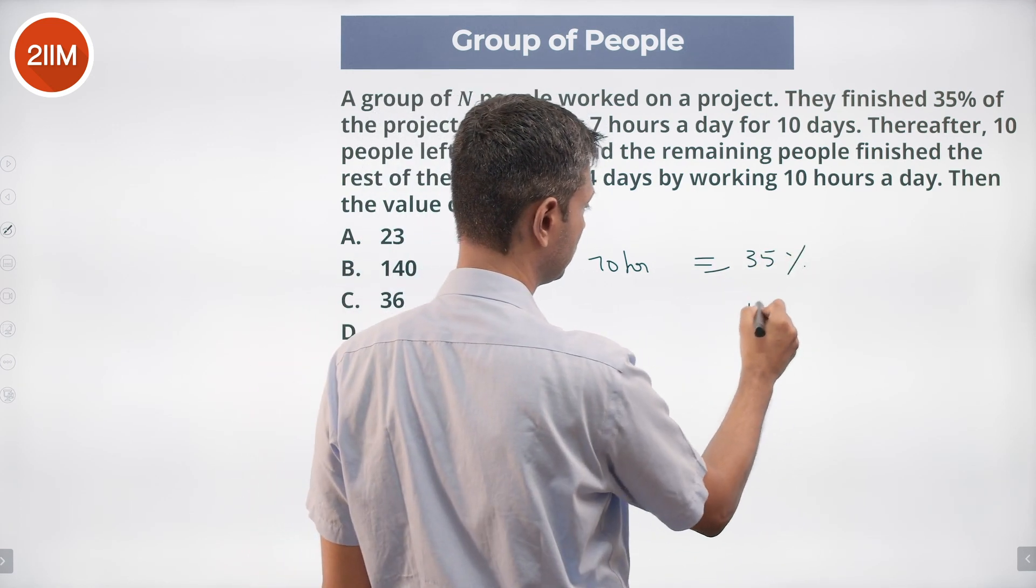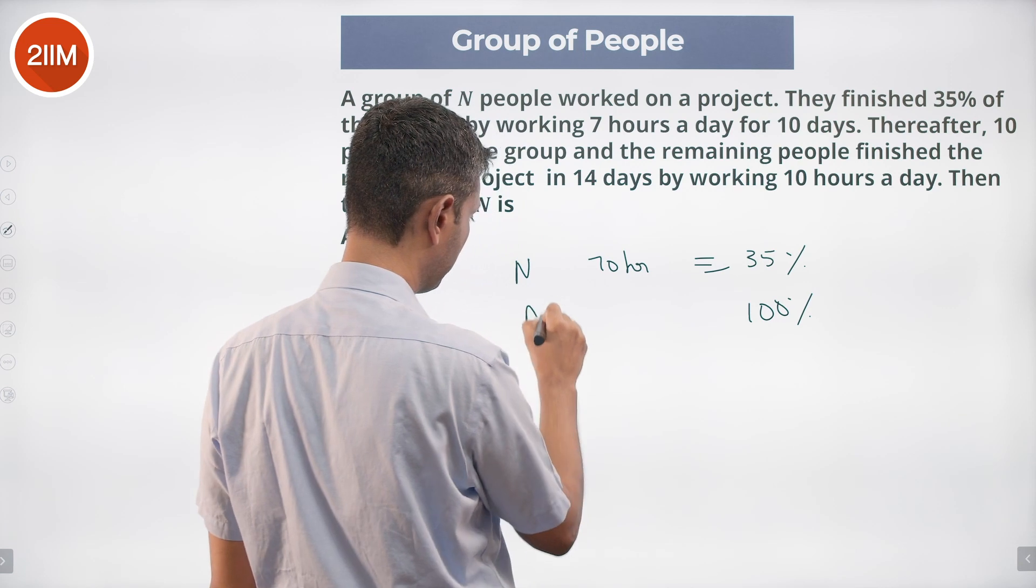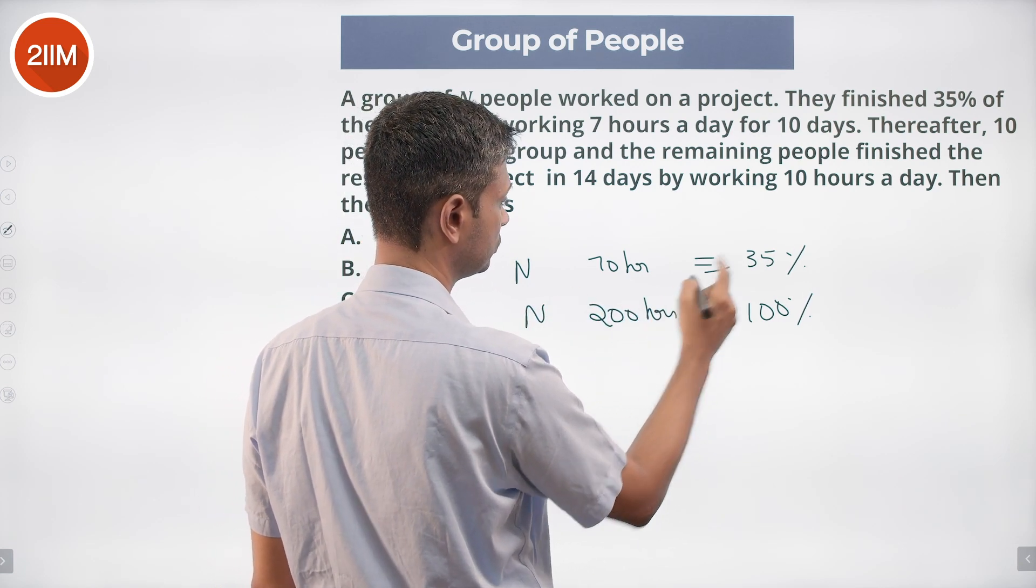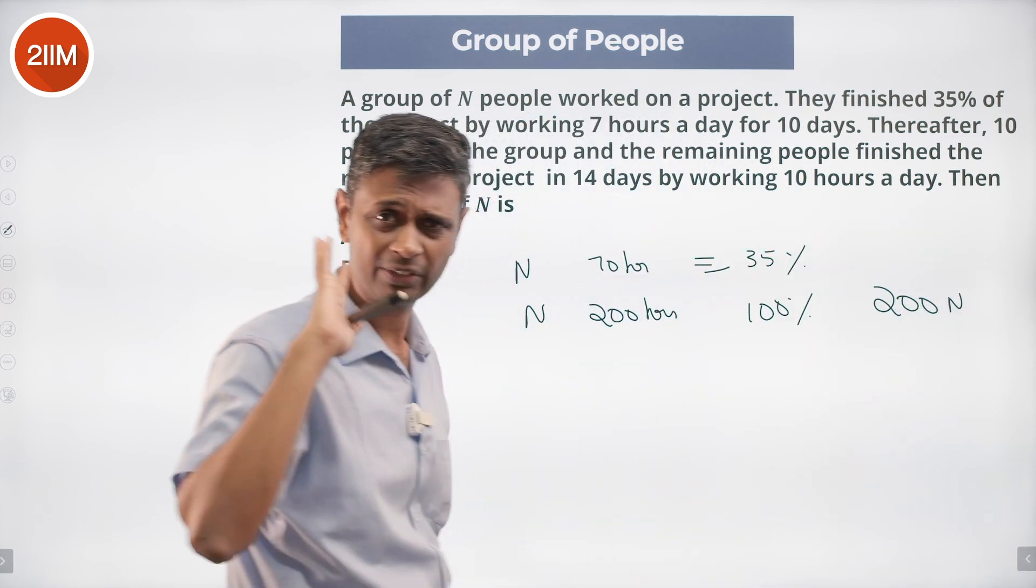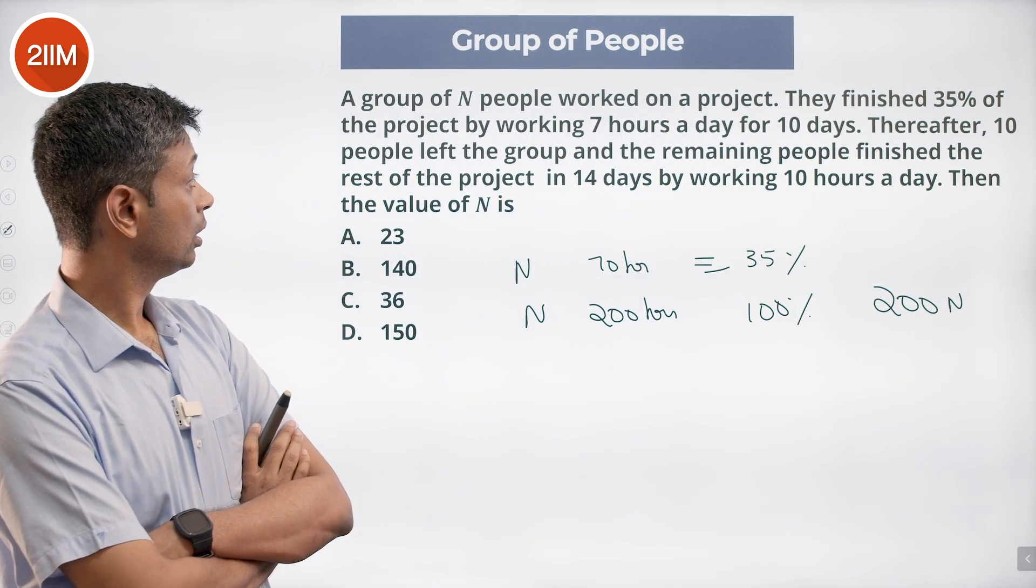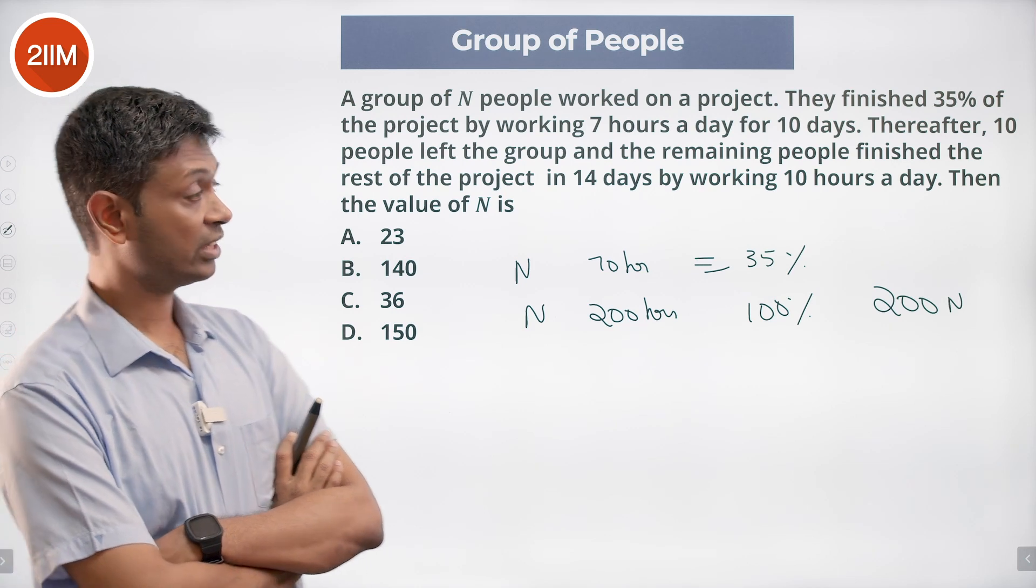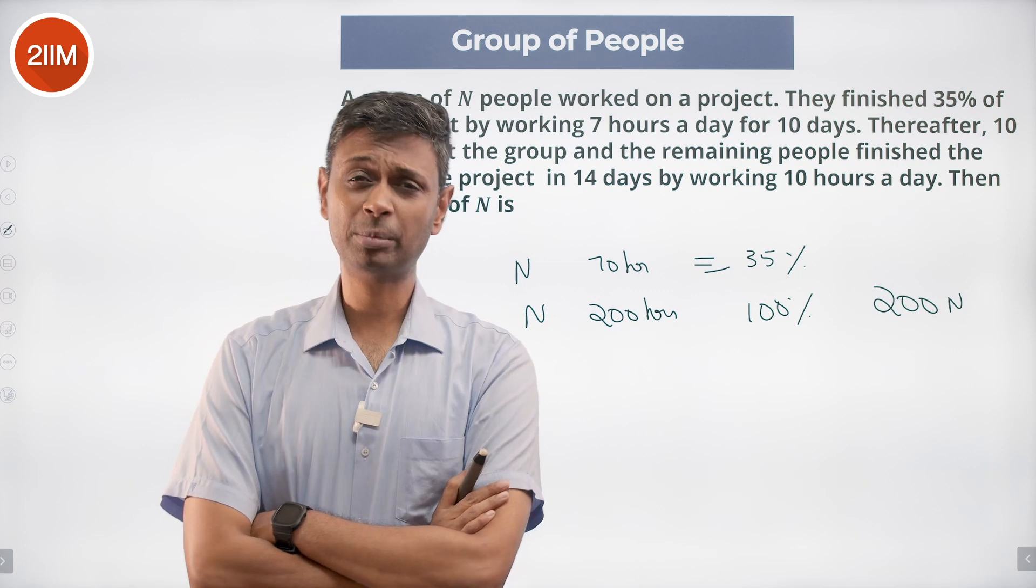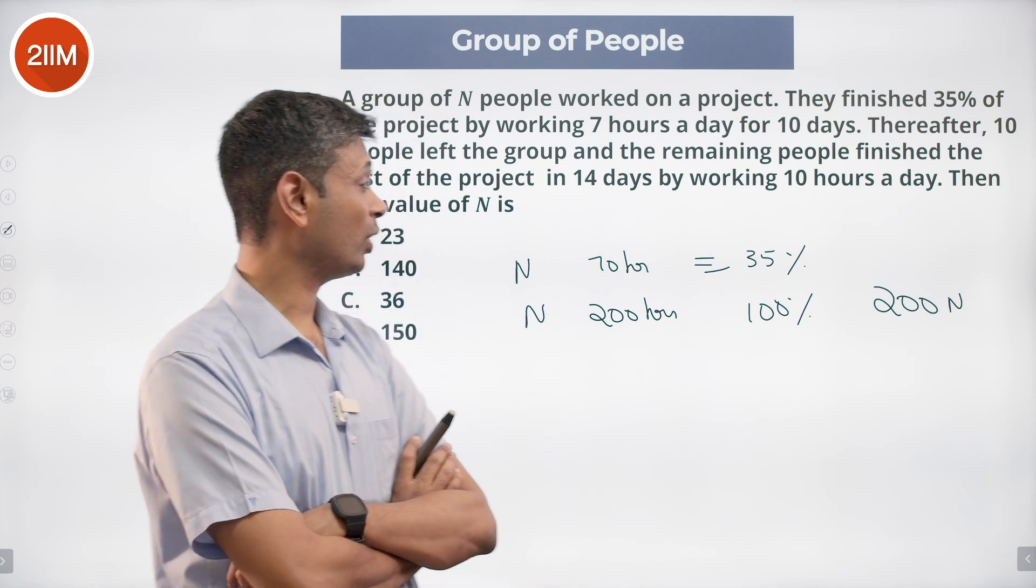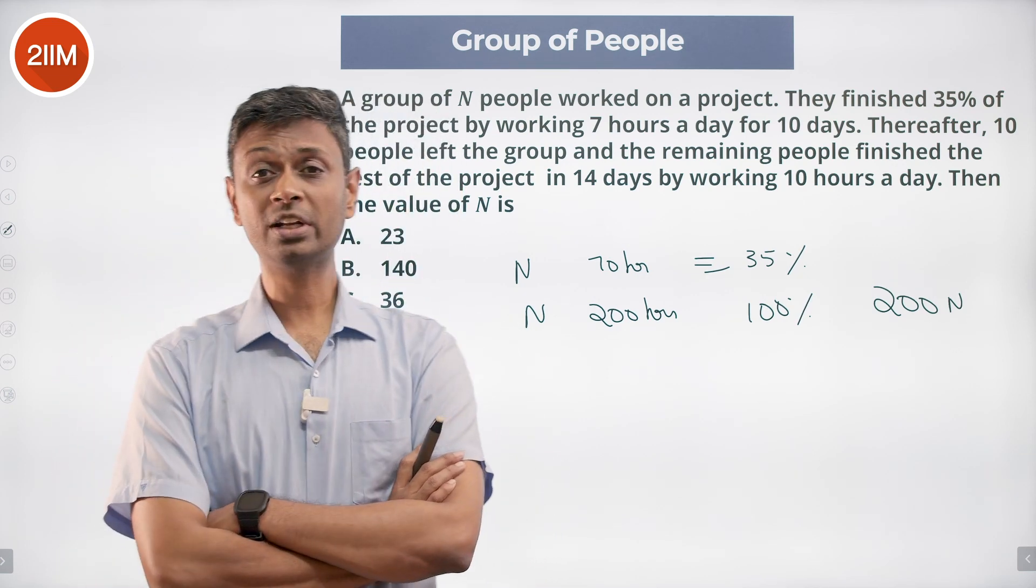For 100%, it would be N people for 200 hours. So total task is 200N man-hours. Very clear: 7 hours a day for 10 days equals 70 man-hours times N. 70N is 35% of the task. The full task is 200N man-hours required to finish this project.